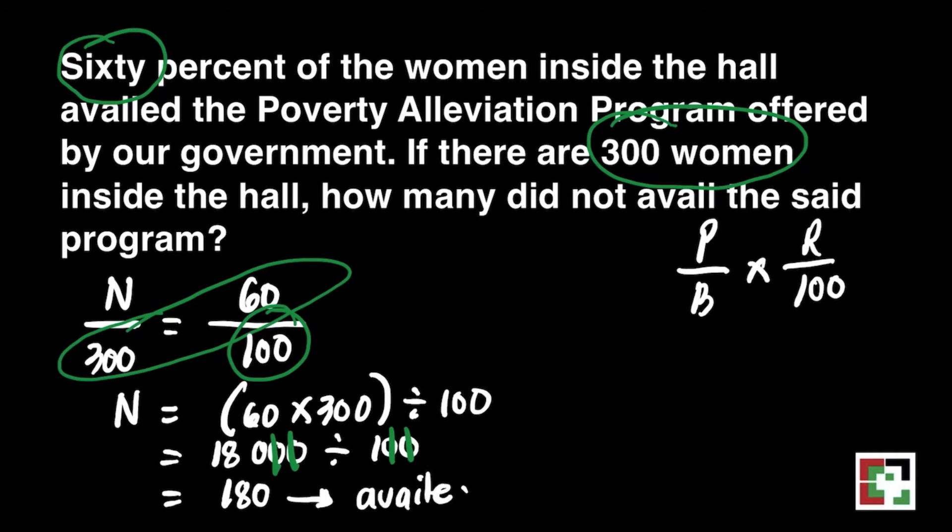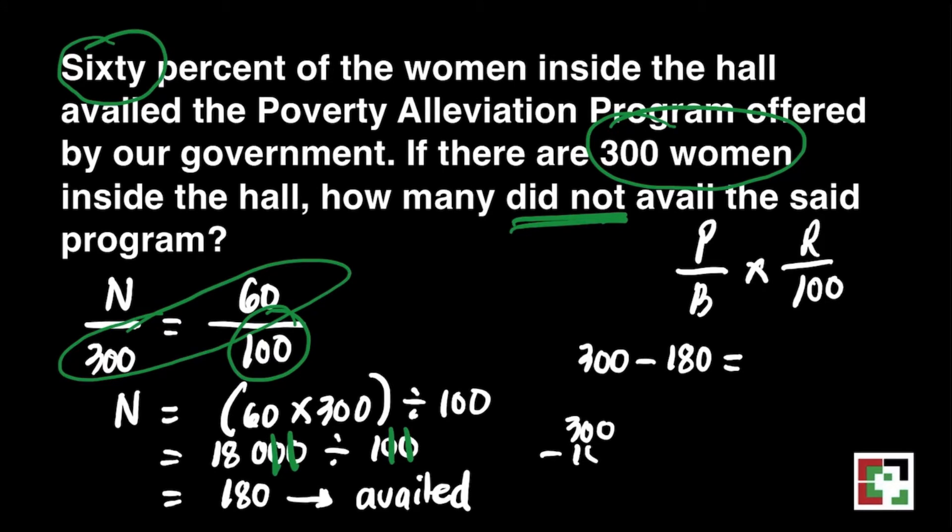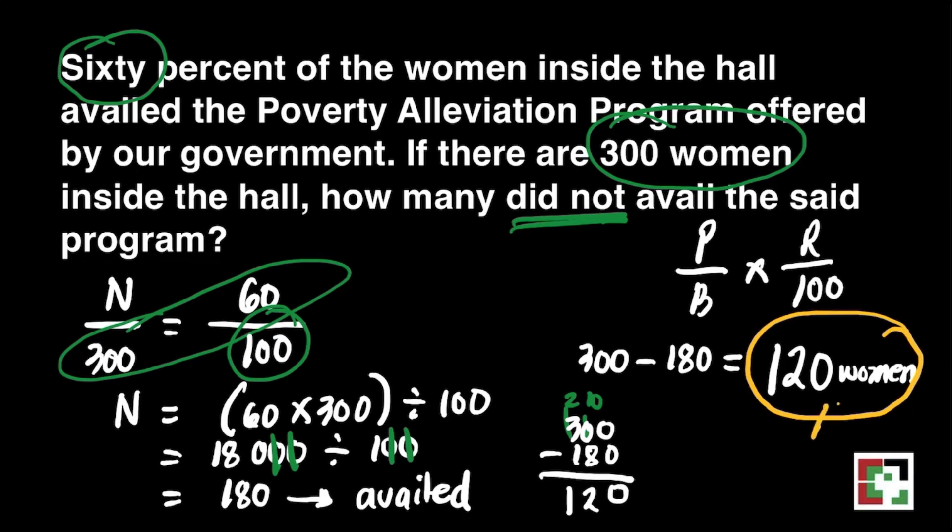180 is not yet the final answer because we're looking for the one who did not avail the said program. So we will just subtract 300 minus 180 is equal to 120 women. So our final answer is 120 women.